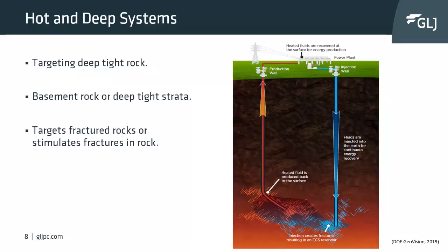The third type of geological setting is hot and deep systems. These target hot deep rock — this could be basement igneous rock, metamorphic rock, or hot deep tight strata. The goal is to target or stimulate fractures in the rock to produce water from an injector well, flowing through the fractures while heating up, all the way to the production well.